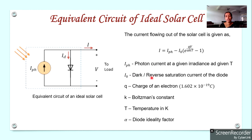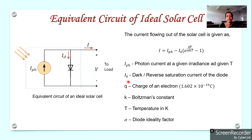I0 is called the dark current because under dark conditions — when there is no solar radiation — IPH will be zero, and the diode will be reverse biased. The current flowing through the diode under that condition is the reverse saturation current I0, which is why it is also known as the dark current.